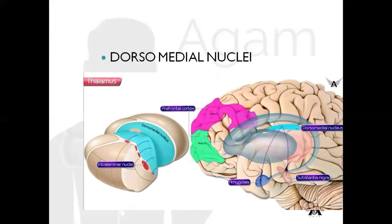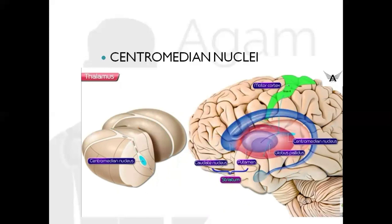Next is the dorsomedial nucleus — a very important nucleus. It has reciprocal connections with the intralaminar nucleus and is also reciprocally connected to the prefrontal cortex. It is important for emotion, affect, and behavior, and forms part of the limbic system. Next is the centromedian nucleus: it is a nonspecific connection, reciprocally connected to motor areas. It receives input from the globus pallidus and projects diffusely to the putamen, caudate nucleus, and motor cortex. Its main role is the general arousal system.